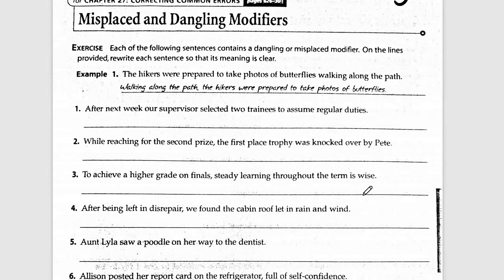Your third page: each sentence contains a dangling or misplaced modifier — they mean exactly the same thing. A dangling modifier is in an incorrect place, oddly modifying something that shouldn't be modified that way. On the lines provided, rewrite each sentence so its meaning is clear. 'The hikers were prepared to take photos of butterflies walking along the path.' The modifier 'walking along the path' is incredibly close to 'butterflies,' saying butterflies are walking the path. The fix: 'Walking along the path, the hikers were prepared to take photos of butterflies.'